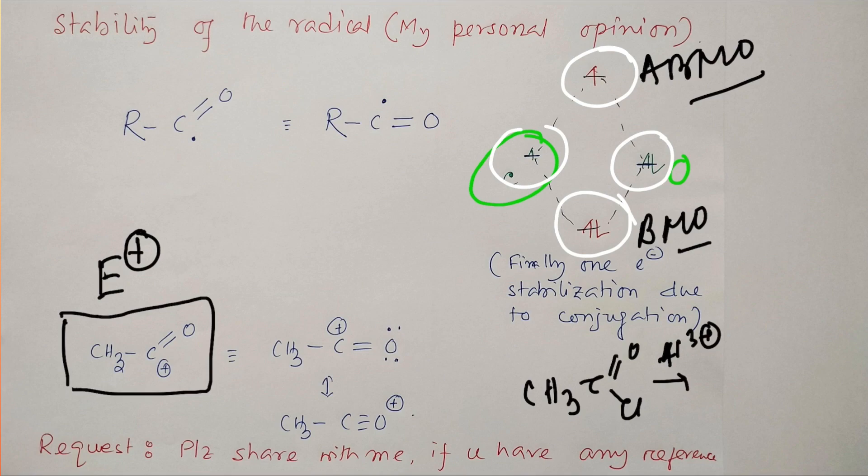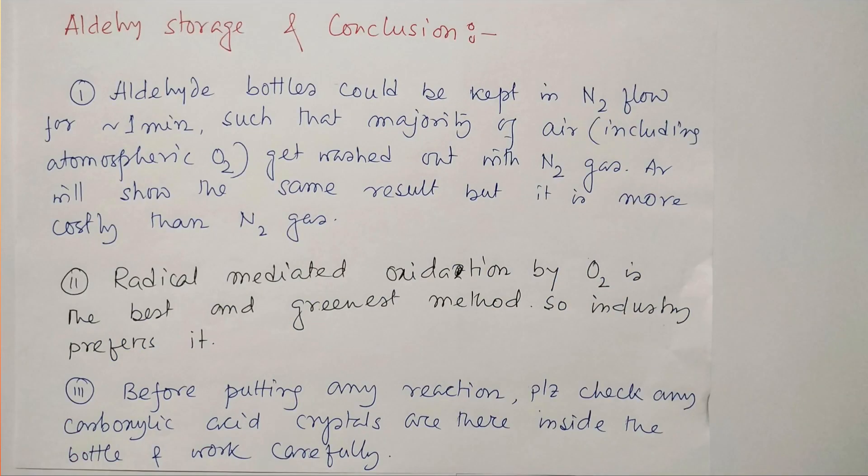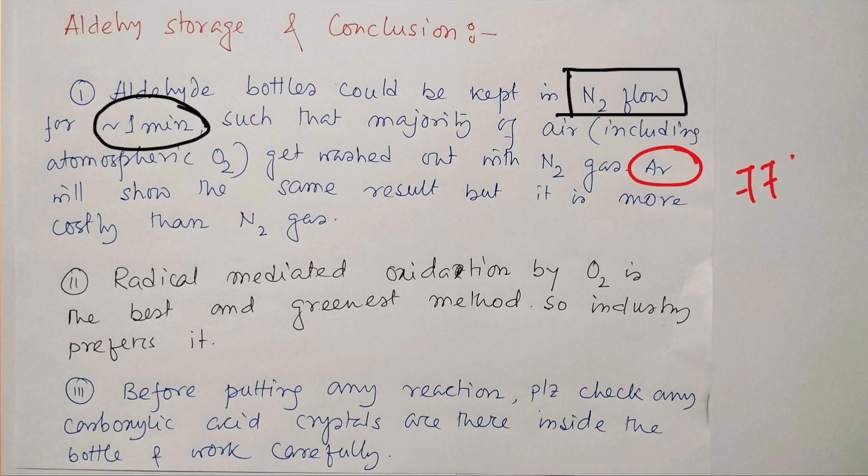So in conclusion, how to store the aldehyde? We should store aldehydes under an oxygen-free environment. How can we do that? We can purge nitrogen gas or keep the bottle under nitrogen flow for about one minute. In this way, the majority of oxygen from the air will be eliminated and the bottle will be filled with nitrogen gas. Close the bottle and keep it. Instead of nitrogen, you can use argon also—it will work the same, but remember argon is costlier because the atmosphere contains 77% nitrogen whereas less than 1% argon. Obviously, nitrogen is widely available and cheap, so use this preferentially.